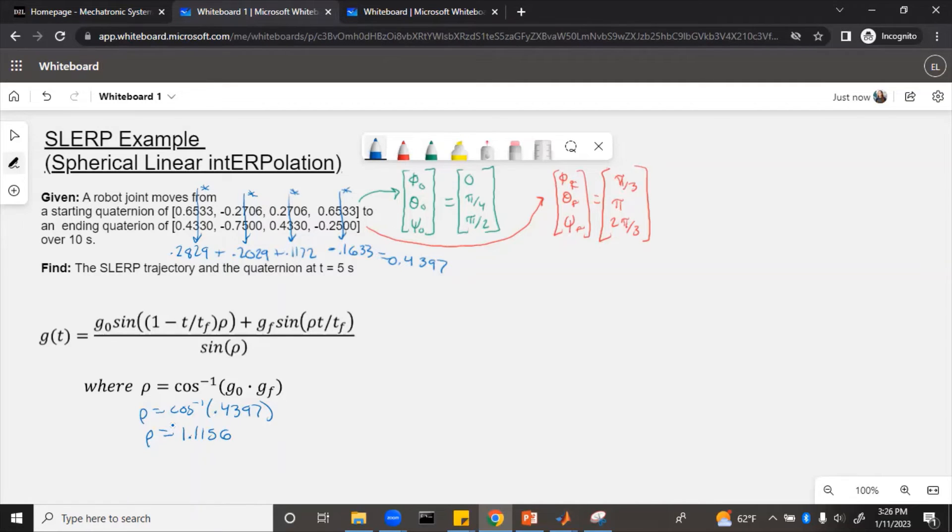That's rho. Now we can plug in rho as well as the initial and final quaternions to the g of t formula.